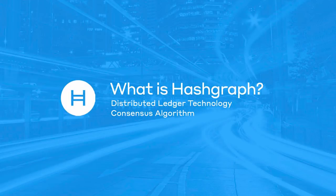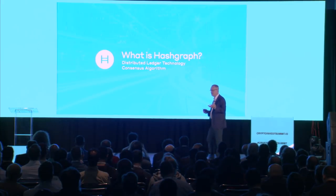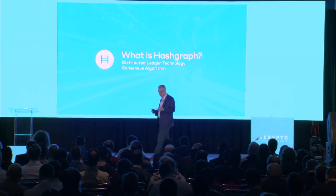So what is Hashgraph? Hashgraph is first and foremost not blockchain. Hashgraph is an alternative to blockchain. Blockchain is a term that describes a data structure and a consensus algorithm. Hashgraph is similar in that regard. Leiman Baird, PhD from Carnegie Mellon, my business partner and the inventor of Hashgraph, back in 2012 decided he wanted to tackle the problem of distributed consensus at scale. It took three years before he had a breakthrough in 2015. Today we call that breakthrough the Hashgraph.